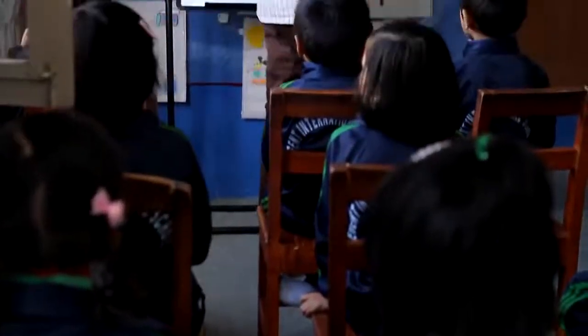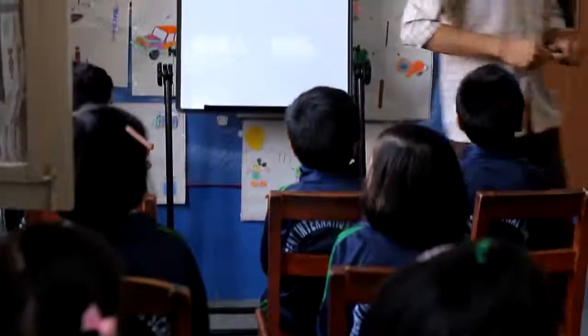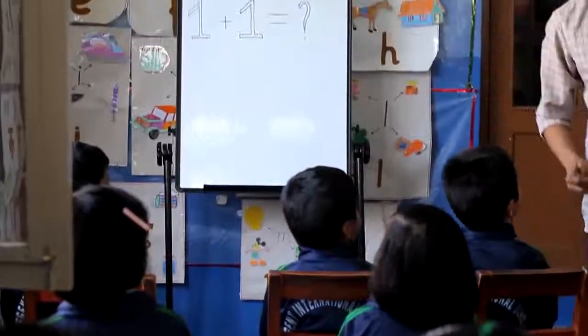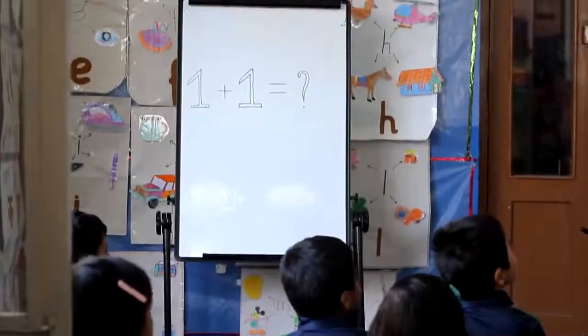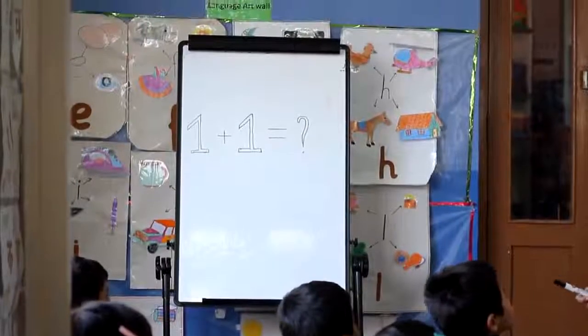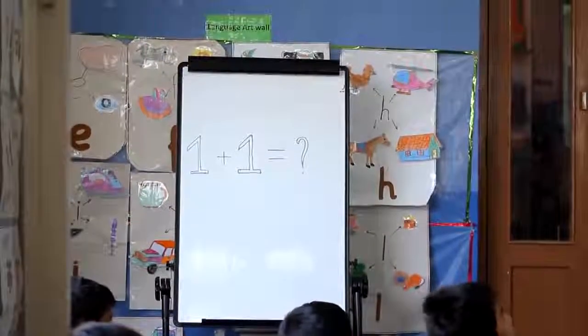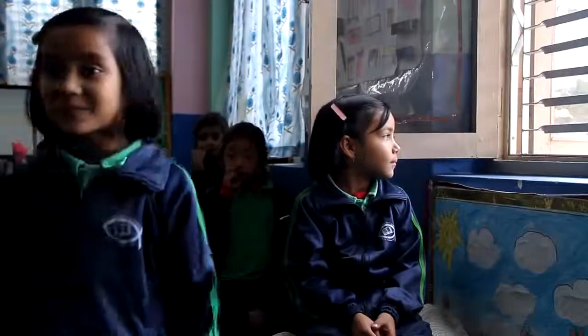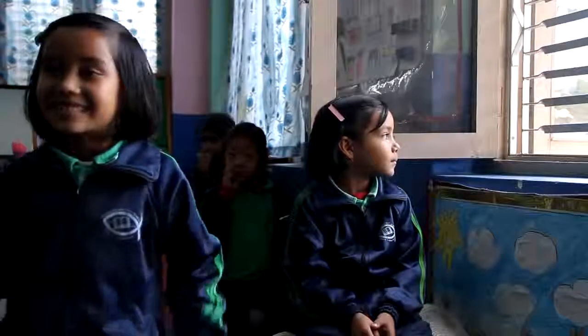1 plus 1 is equal to — both units. Amri: 2. Sophia: 2. Samyok: 2. Dixia: 2.